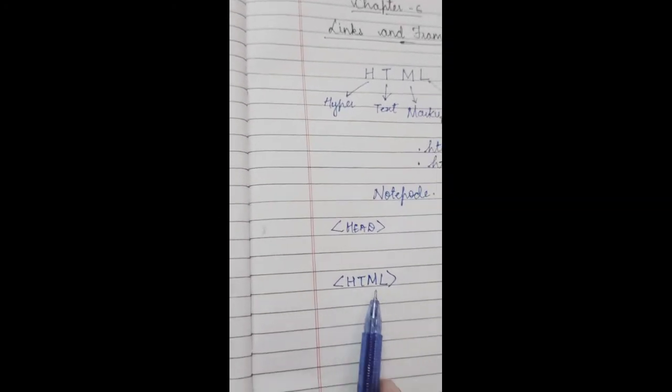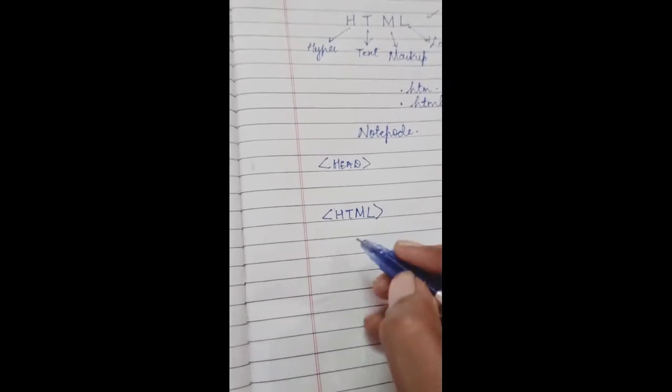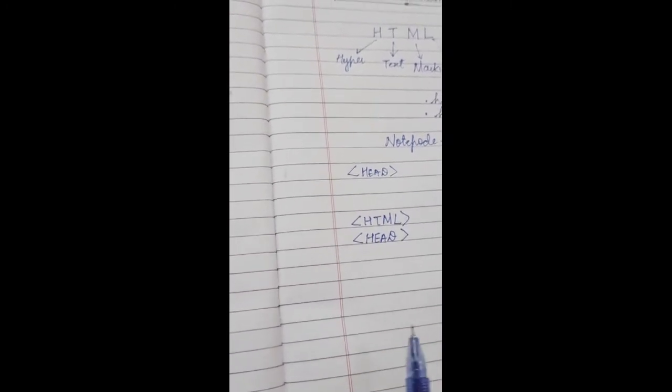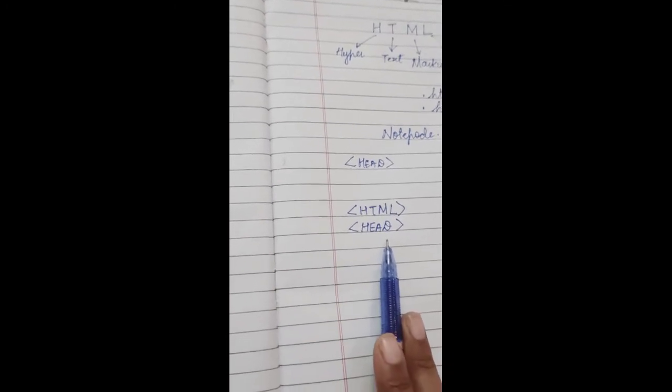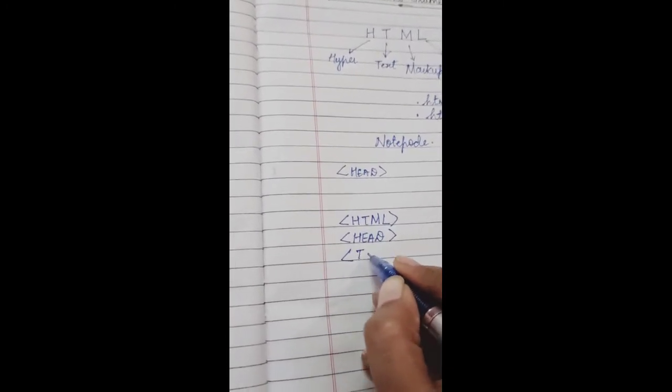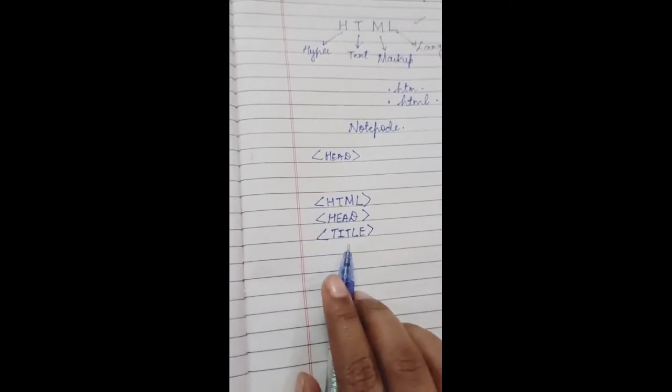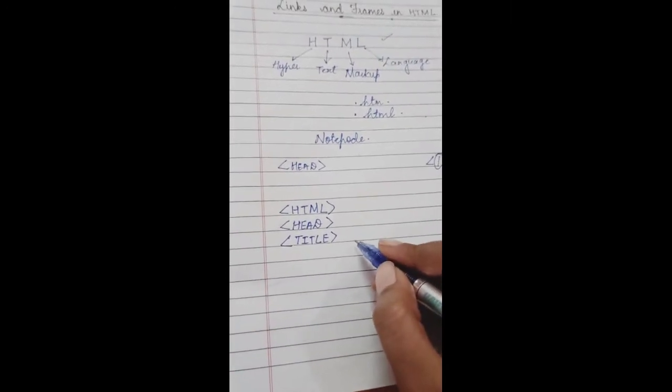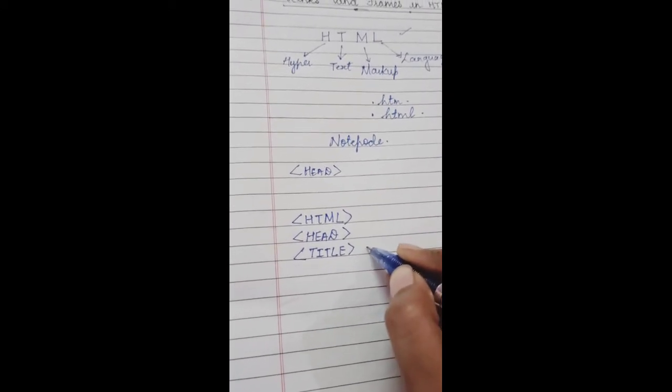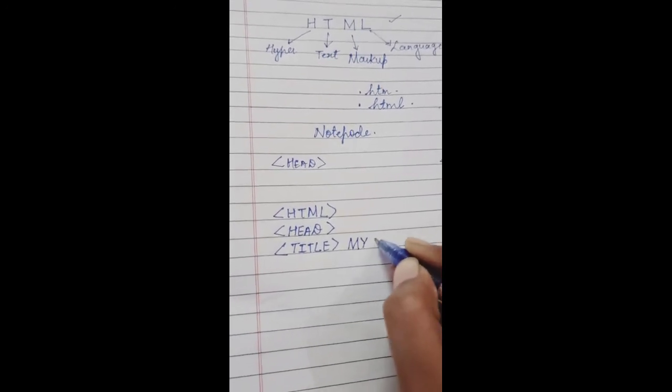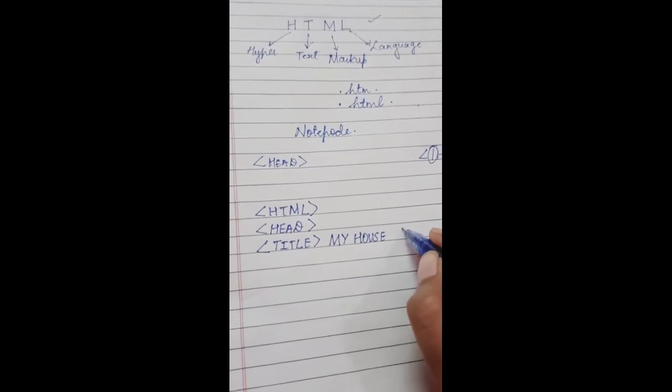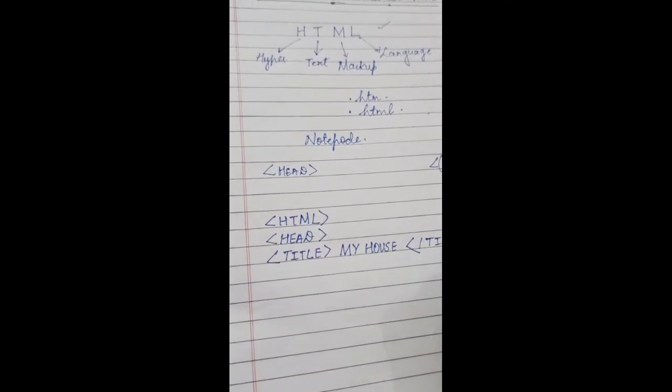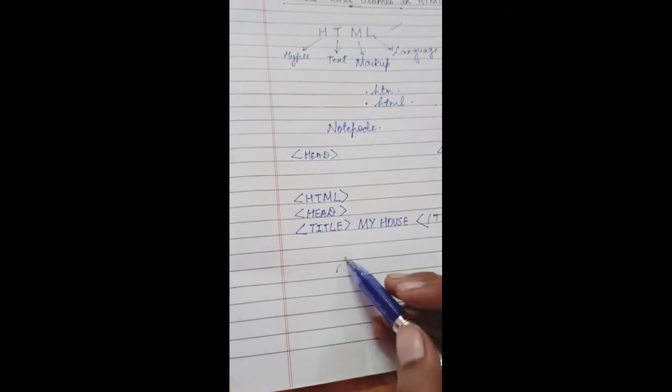It indicates that this web page is written in HTML. And then what we write? We write head. Head tag contains information about the web page. And then we give title. This is title tag. Title tag contains web page title. So suppose you want to give the title 'My House', this will be your title. And then we close this tag: backslash title. Then we close the head.